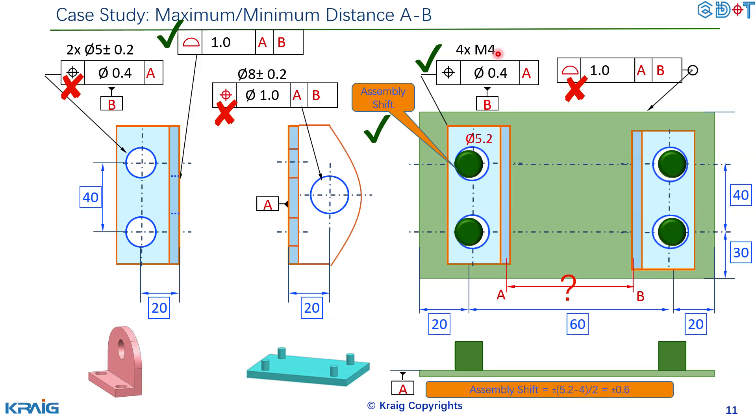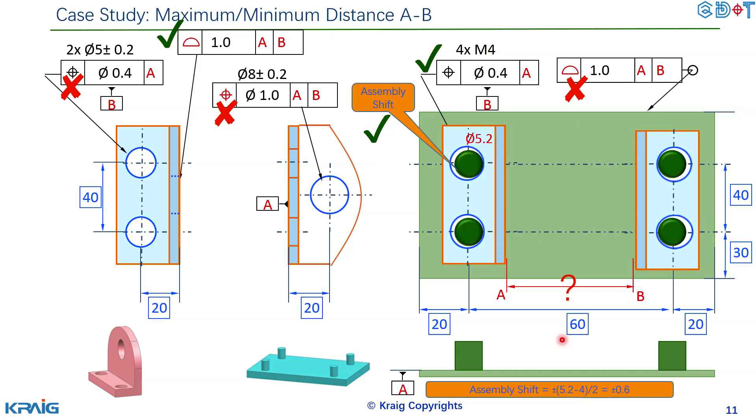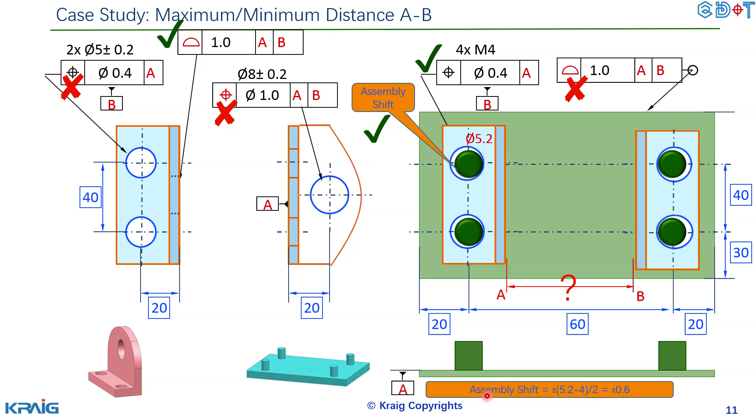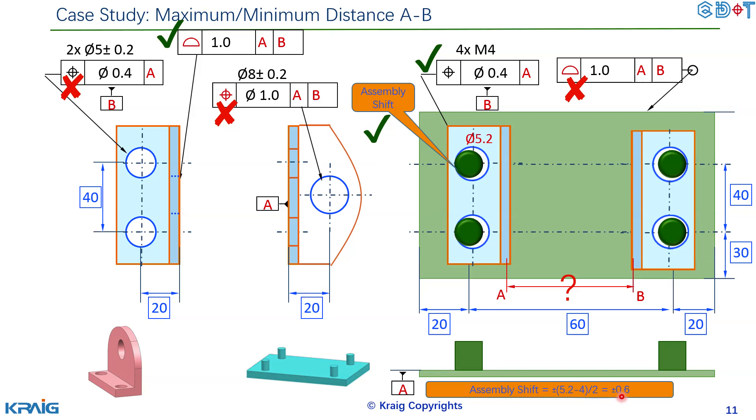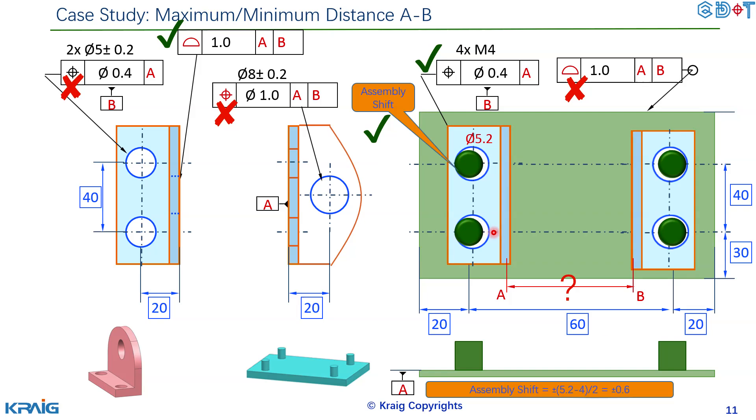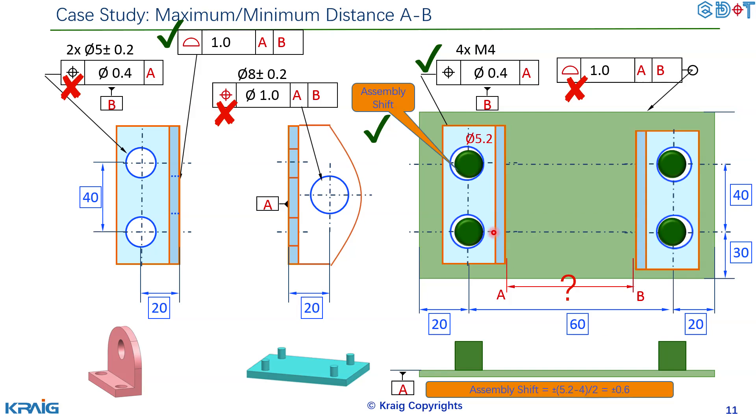4 is the bolt diameter M4. And then divided by 2 plus minus so basically we have assembly shift plus minus 0.6. So that's the last tolerance we should include in the tolerance stack up.